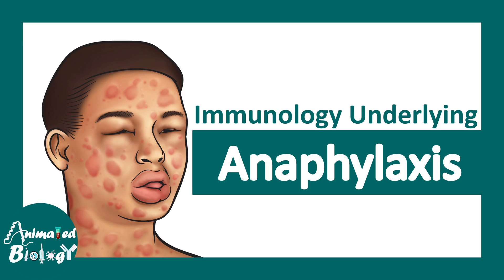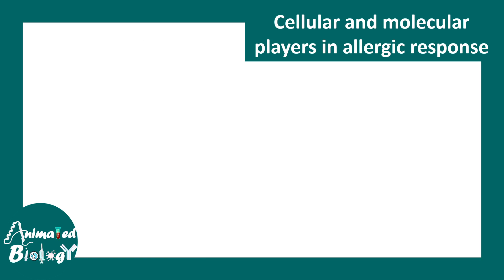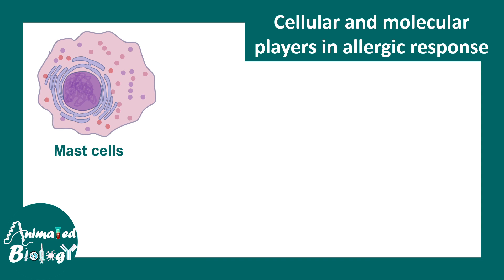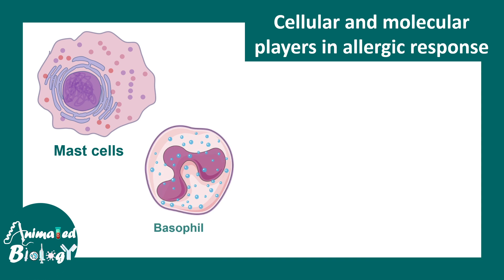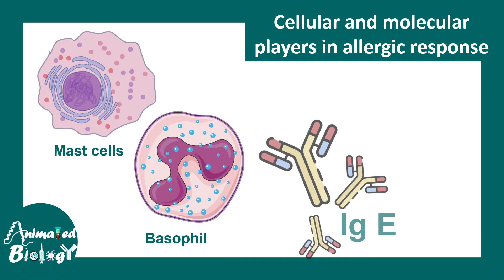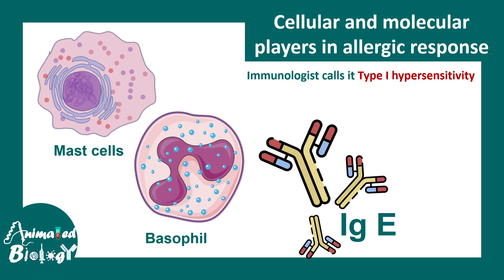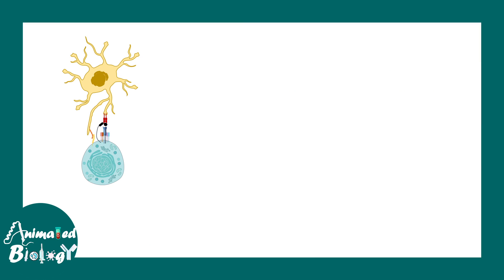The immunology underlying anaphylaxis involves both cellular and molecular components. Majorly, mast cells, basophils, and IgE antibodies are associated with the anaphylactic reaction. It is also a type 1 hypersensitivity reaction, which is rapidly occurring.